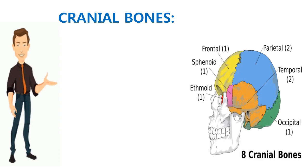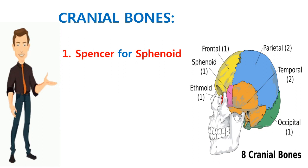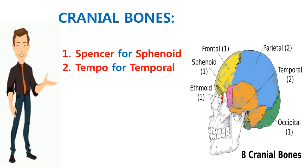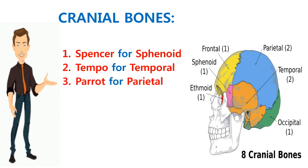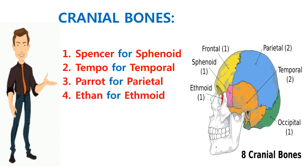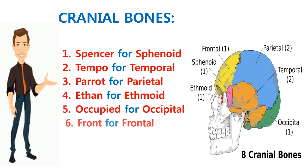Spencer in the story helps us relate to the sphenoid bone. Tempo helps us relate to the temporal bone. Parrot for the parietal bone. Ethan for the ethmoid bone. Occupied for the occipital bone. Front for the frontal bone.